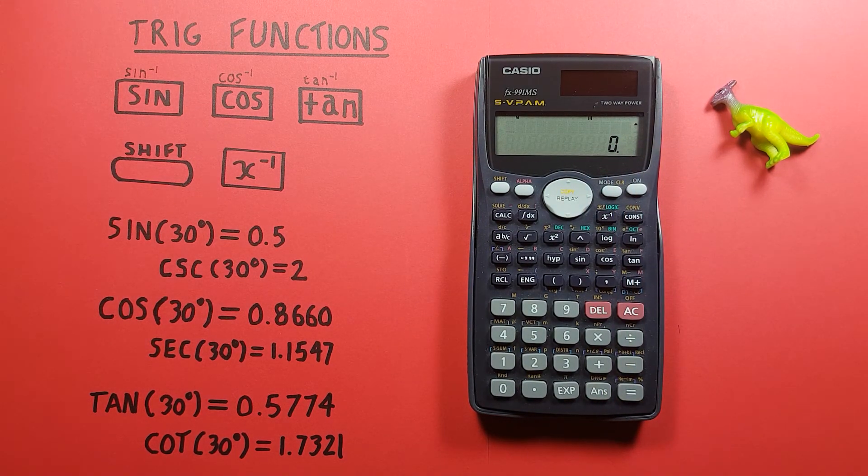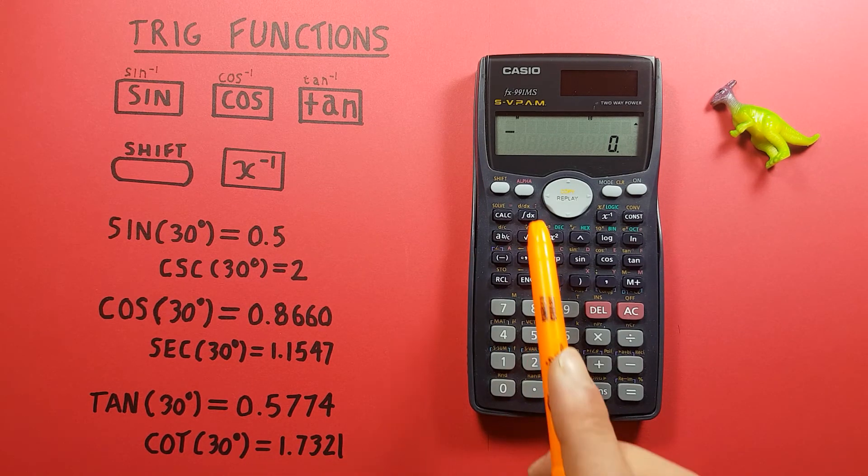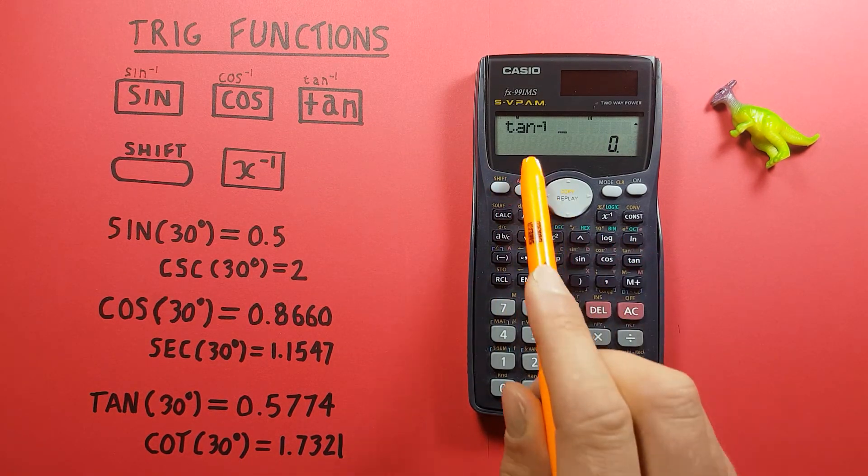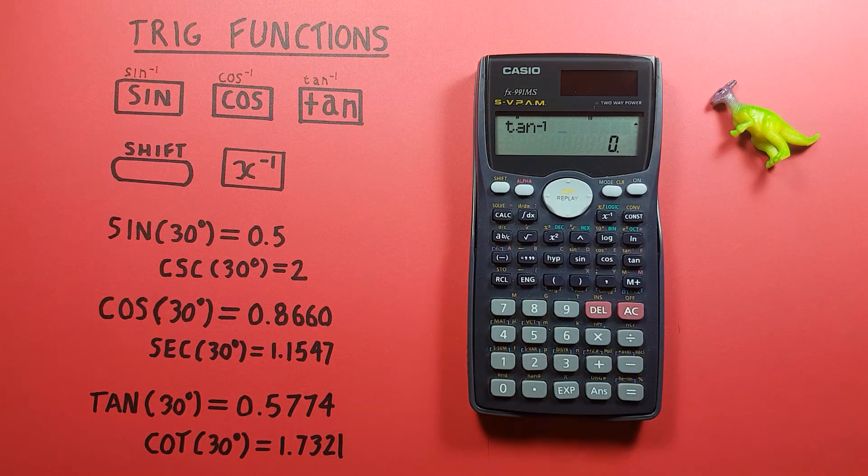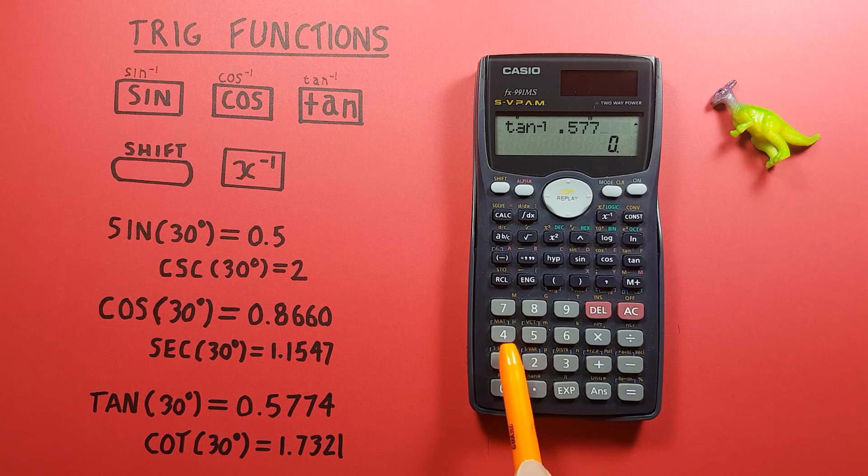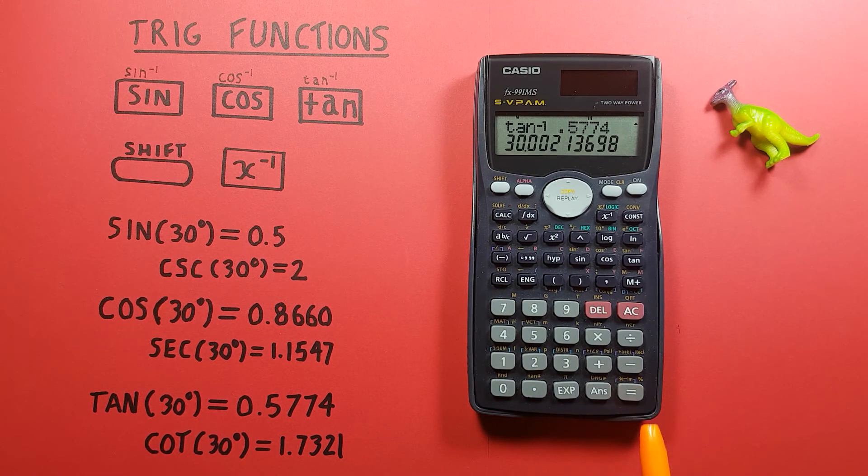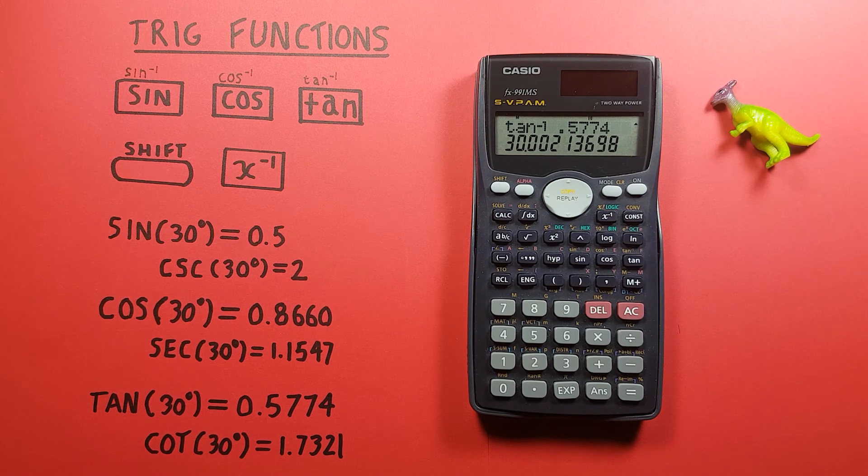Again with tangent, remember we got 0.5774, so if we shift tan, there's our arc tan, 0.5774 equals, this brings us back to our rounded 30 degrees. Alright, I hope this helps out there everybody and good luck on those tests. Thanks.